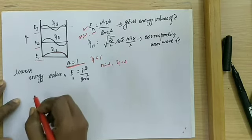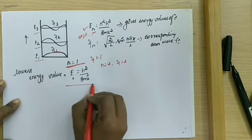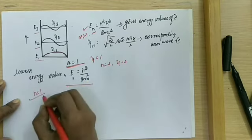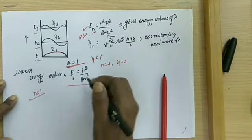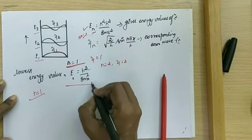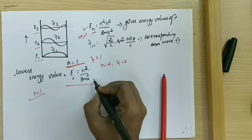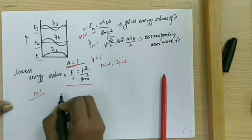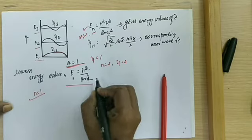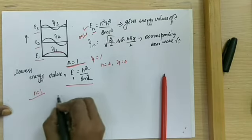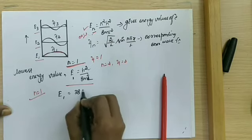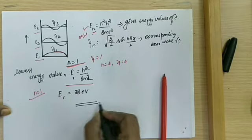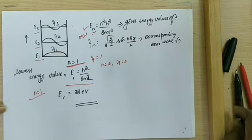As quantum mechanics states, the particle can never be in a still position even at T equal to 0 Kelvin. The minimum energy is obtained by substituting N equal to 1, giving E1 equal to h squared by 8mL squared. When you substitute all constant values — Planck's constant h, mass of the electron m, and the width L — we get E1 equal to 38 electron volts. This is the way to obtain the derivation for the one-dimensional potential well.